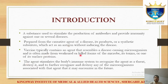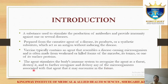Vaccines typically contain an agent that resembles a disease-causing microorganism and is often made from a weakened or killed form of microbes, their toxins, or one of their surface proteins. The agent stimulates the body's immune system to recognize, treat, and destroy the threat, and to further recognize and destroy any microorganisms associated with that agent encountered in the future.